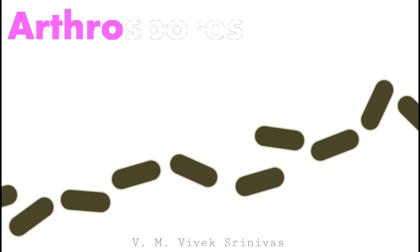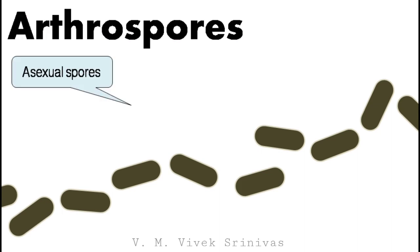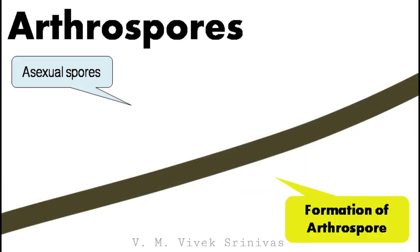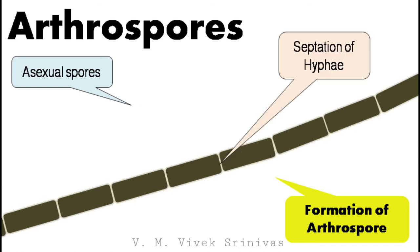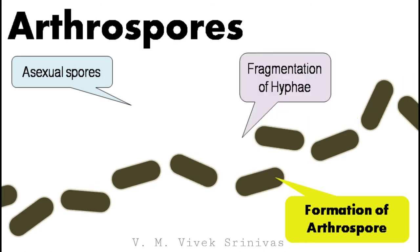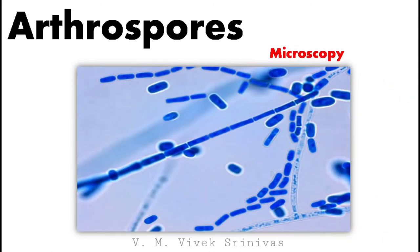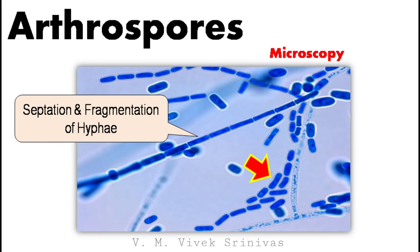Fourth, arthrospores. This is also an asexual spore. In the formation of arthrospores, first a septum is created in between the hyphae, then this septum gets fragmented to form arthrospores. This microscopy image shows the arthrospore where you can notice the septation and fragmentation of hyphae to form arthrospores.